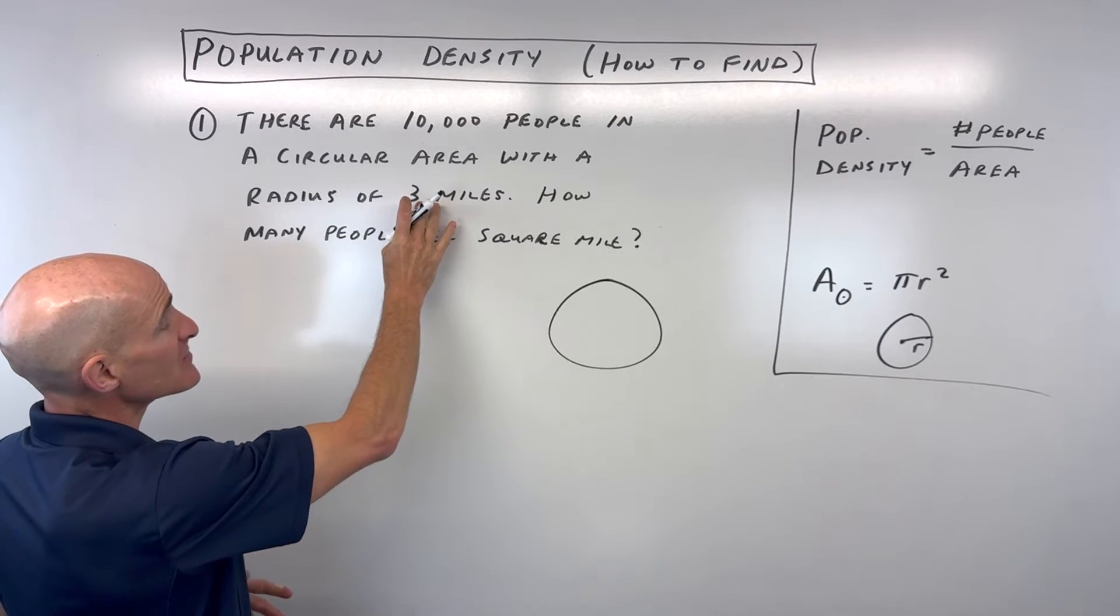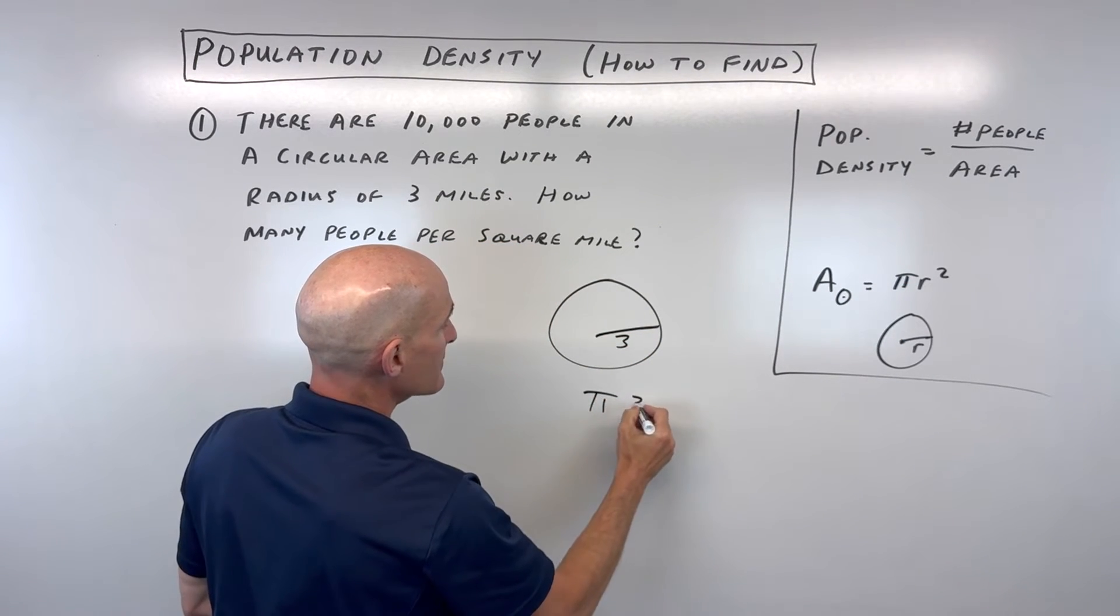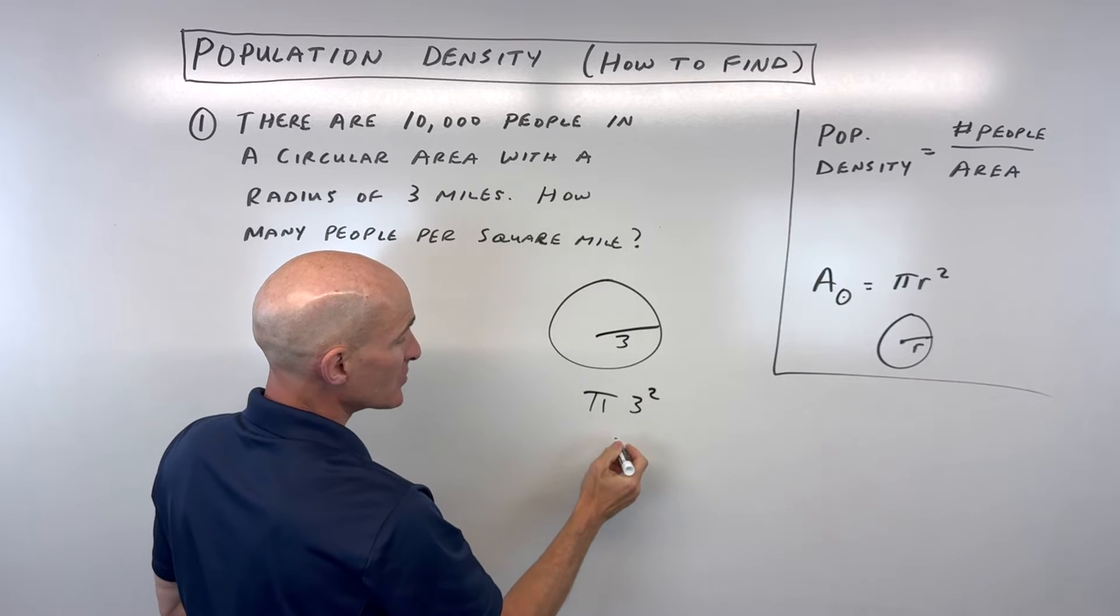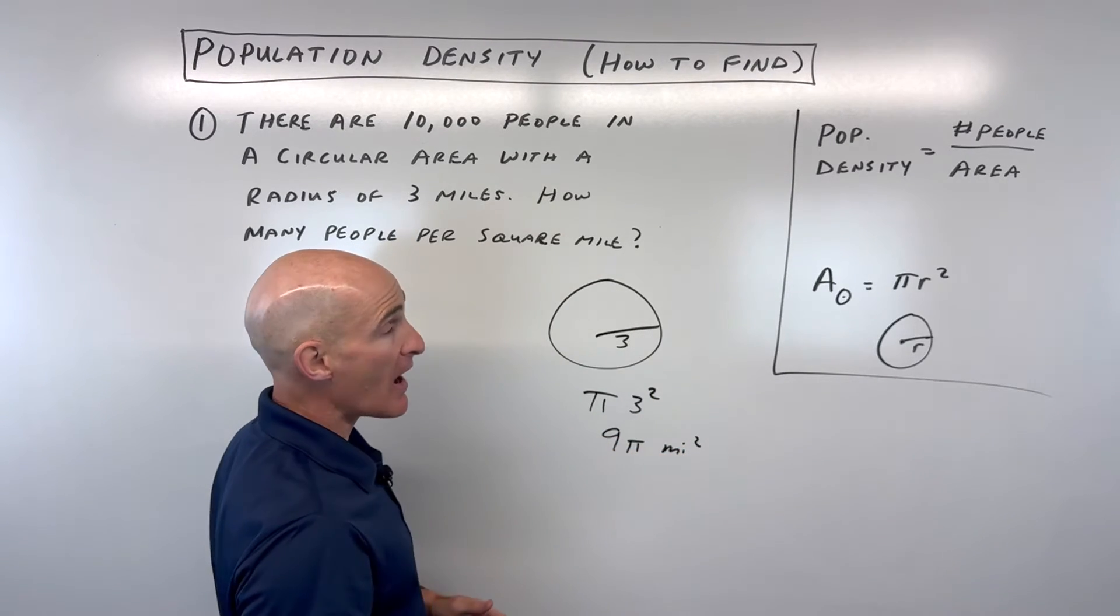So in this case, because the radius is three, this is going to be pi times three squared. Three squared—three times three—is nine. This is nine pi square miles.